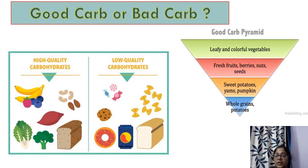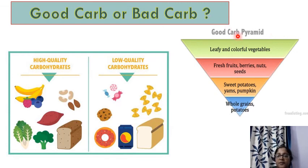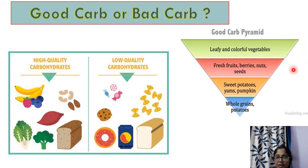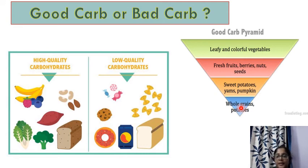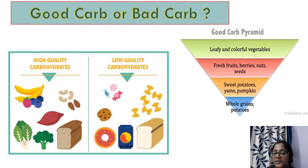Now let's look at the good carb pyramid. This is a downward pyramid, so the best options are at the top. Leafy and colorful vegetables are the best carbs. Fresh fruits, berries, and nuts are also very good carbs and great sources of monosaccharides. Sweet potatoes, yams, pumpkin, and whole grains come next. Potatoes are on the lower side. By looking at your plate, you can calculate how much good and bad carb you're consuming each day.